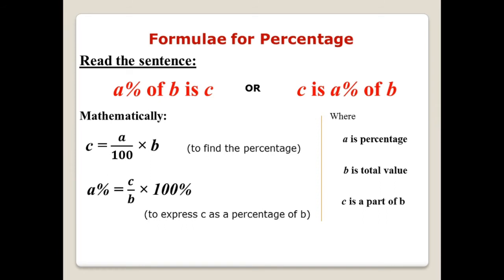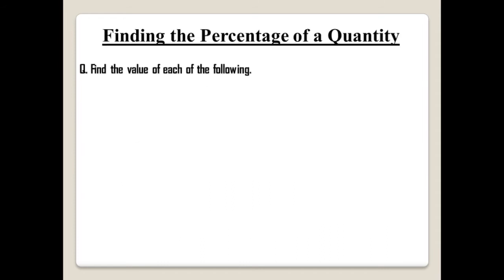Now coming to some questions — we have to find the value of the following ones. The first question is: 20 percent of 130 dollars. The second question is: 75 percent of 40 meters. The third one is: 25 percent of 524.